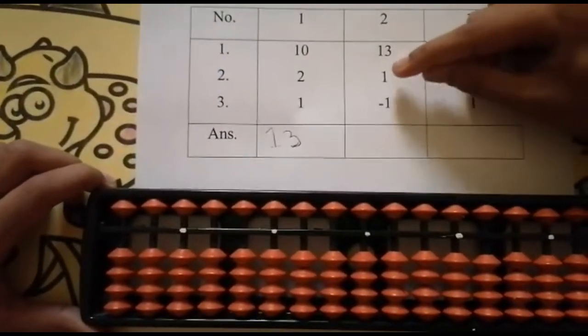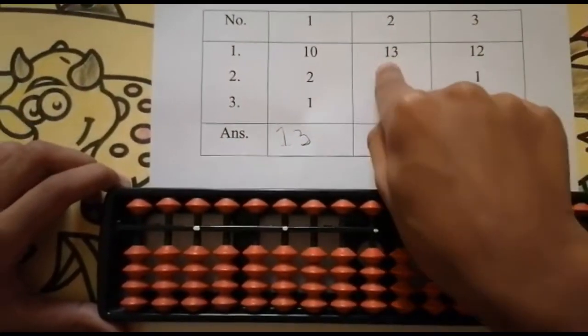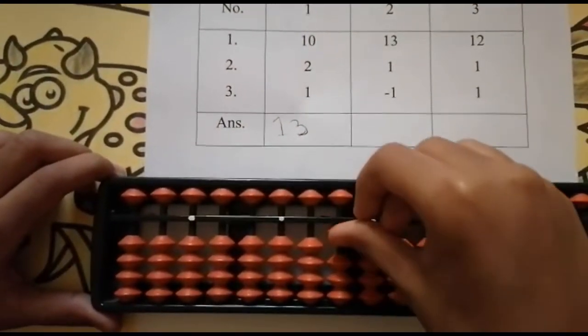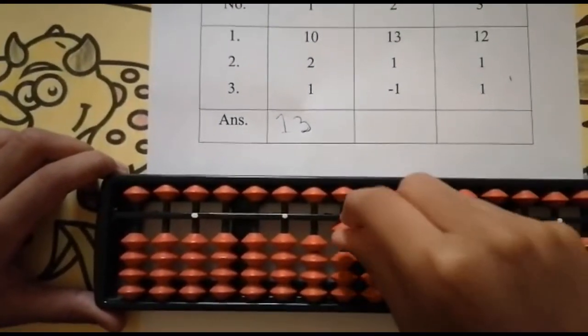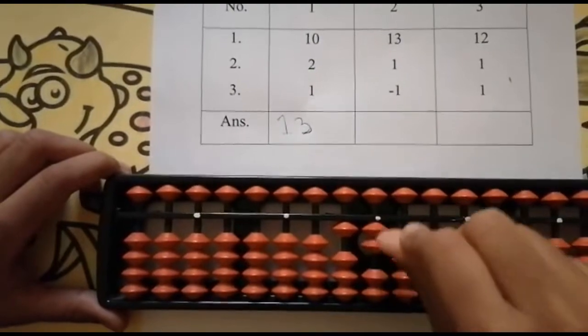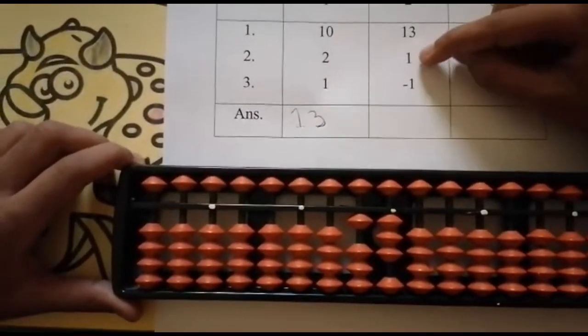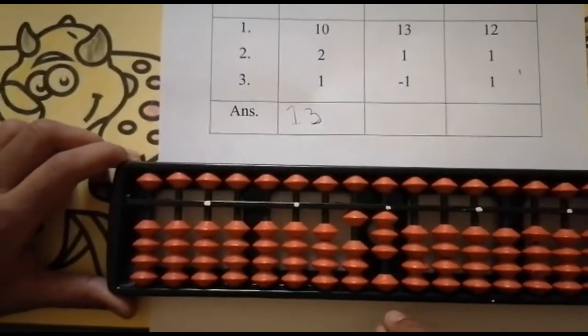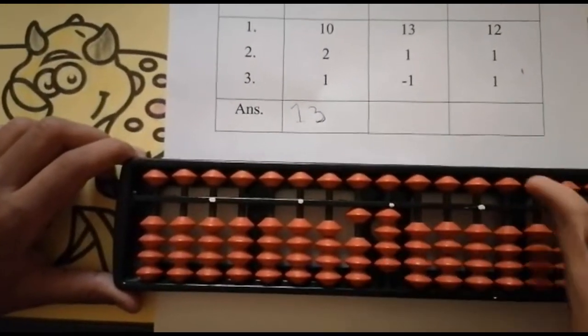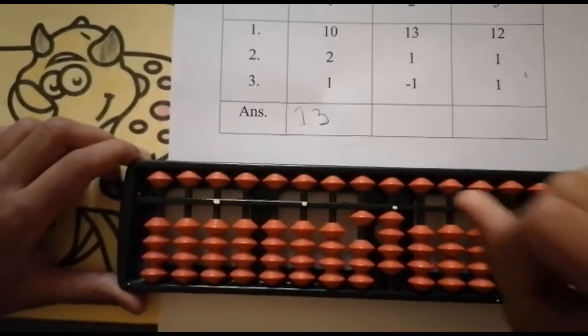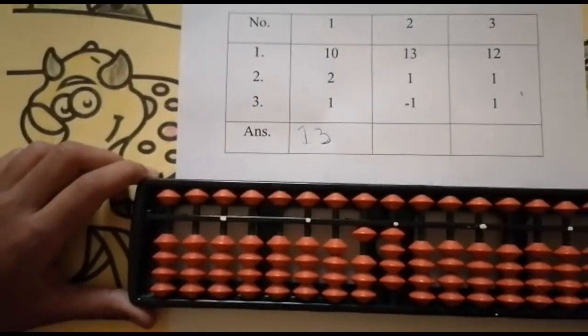The next sum is 13 + 1 - 1. We have to add 10 in the tens place and add 3 at the ones place. 10, 11, 12, 13. Now the next number is 1. Can we add 1? Yes, there is 1 bead balanced. Add 1, keeping the finger, got 14.